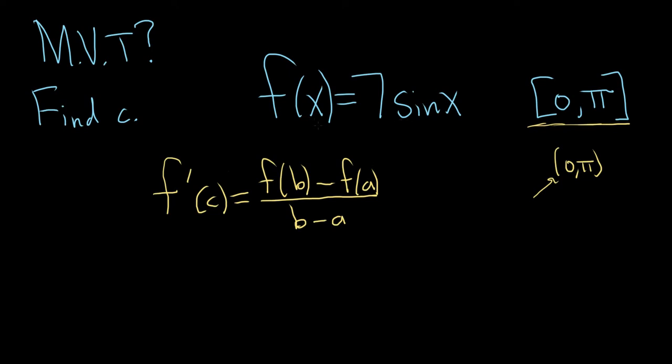So the derivative of sine is cosine. So if you just find the derivative here, f prime of x, you'll get 7 cosine x. So I'm going to come over here and fill that in, and I'll go ahead and use c. So 7 cosine c. You don't have to use c. You can use x, but I'll go ahead and just stick to it in this case and use c.